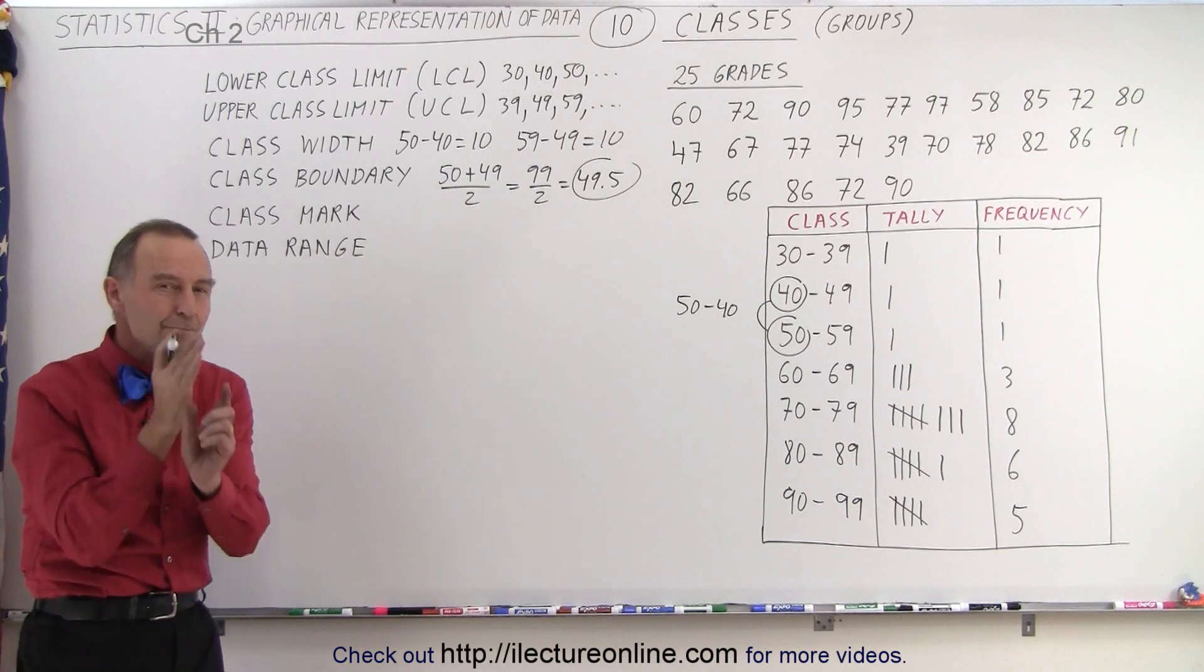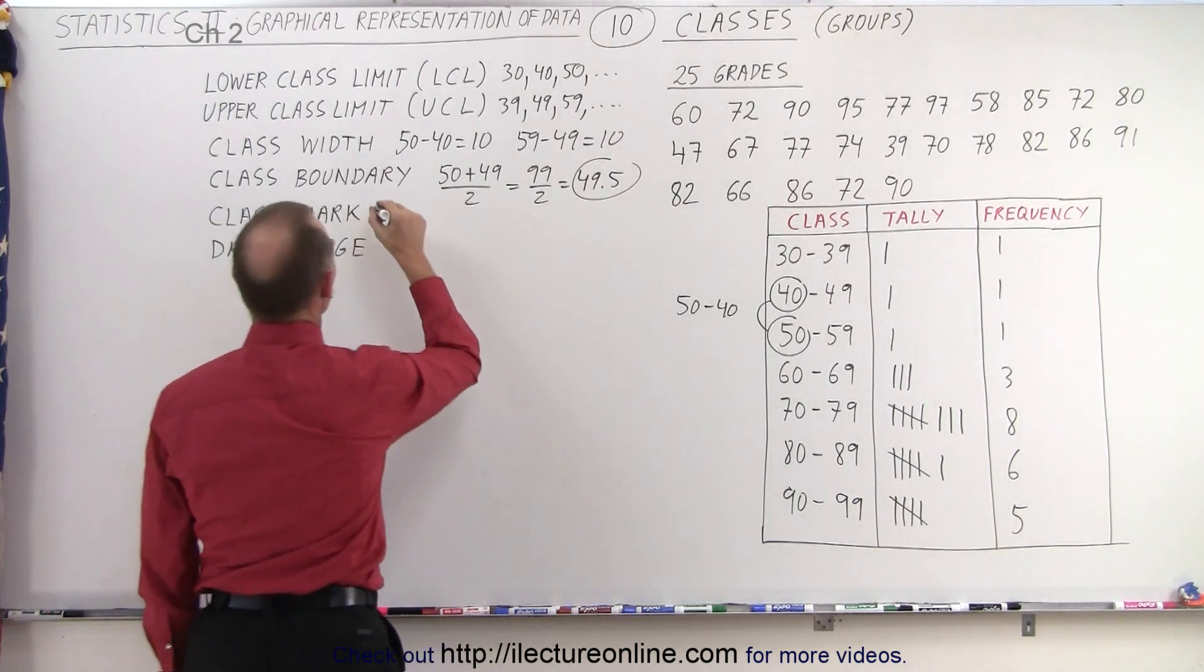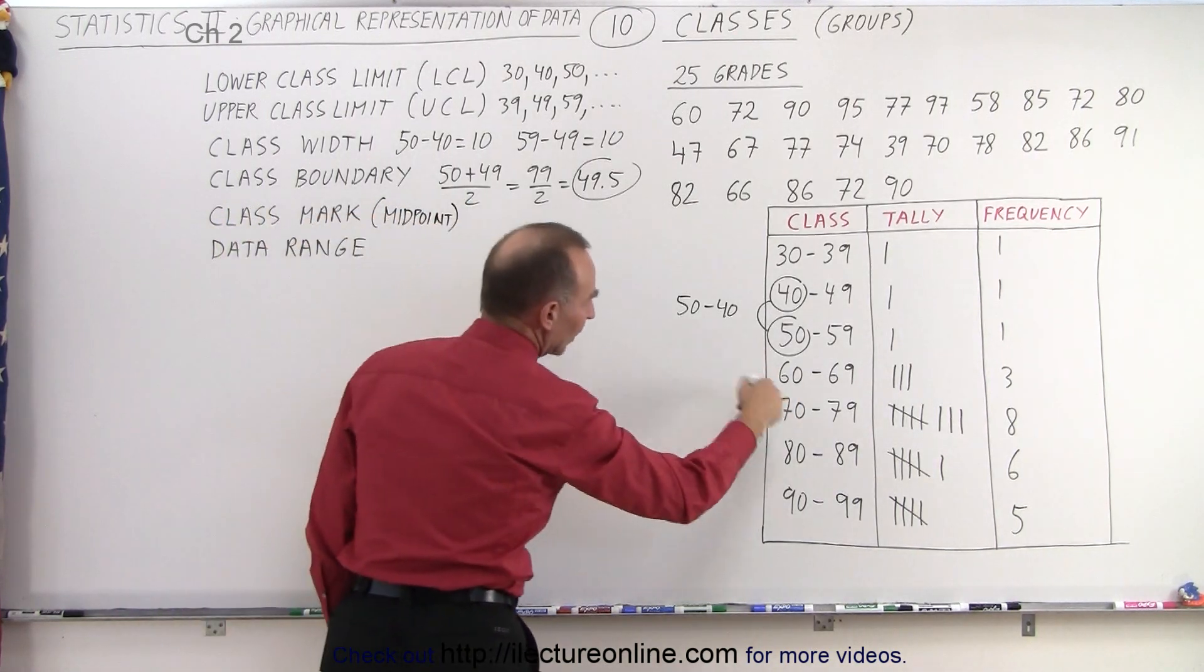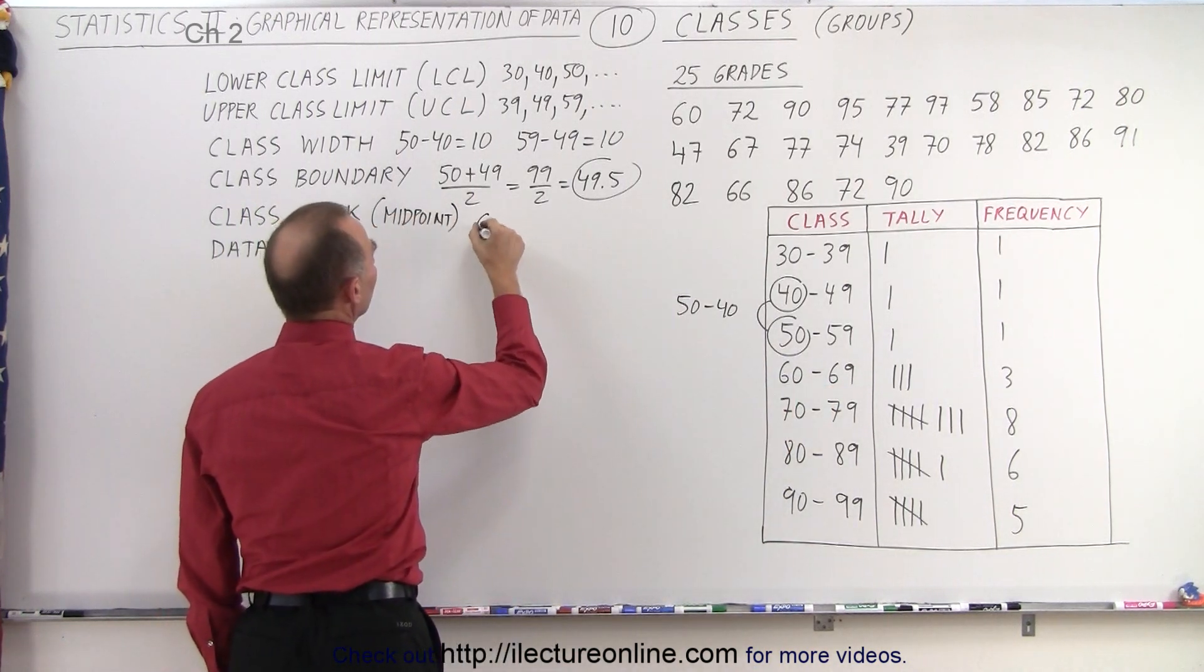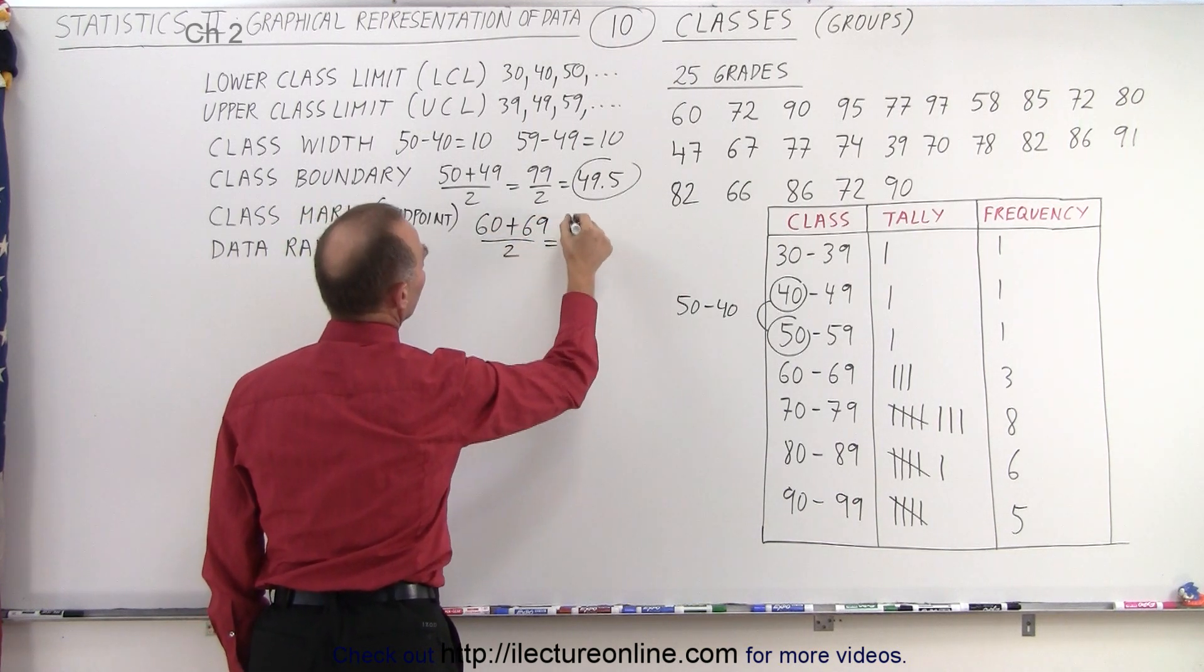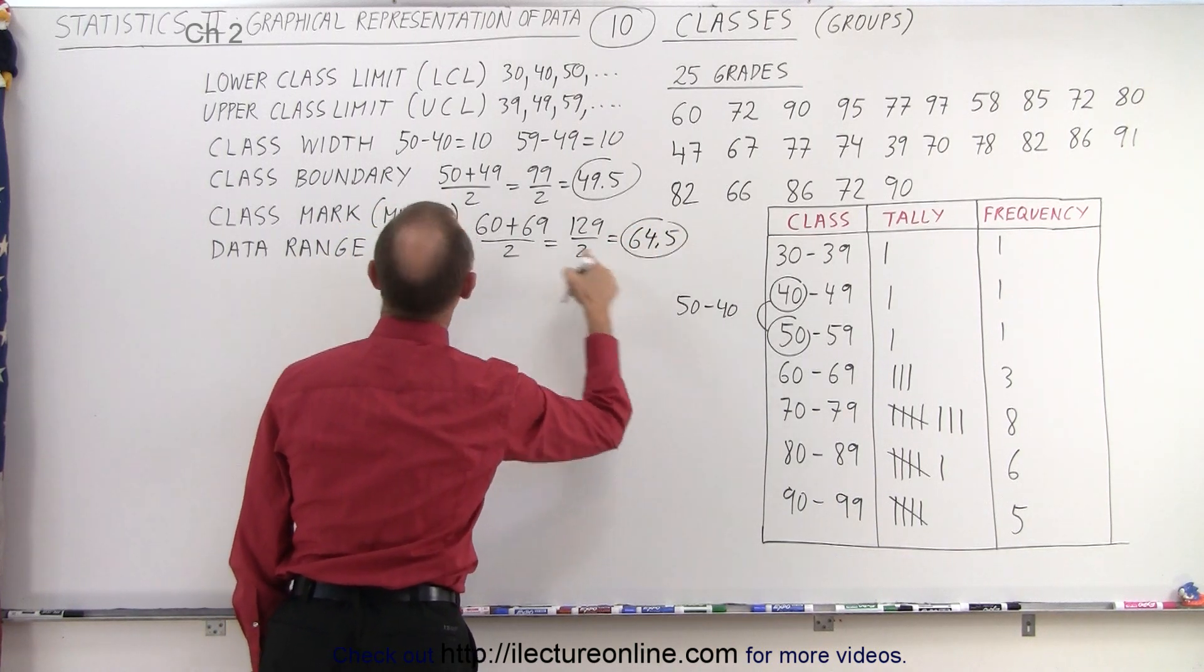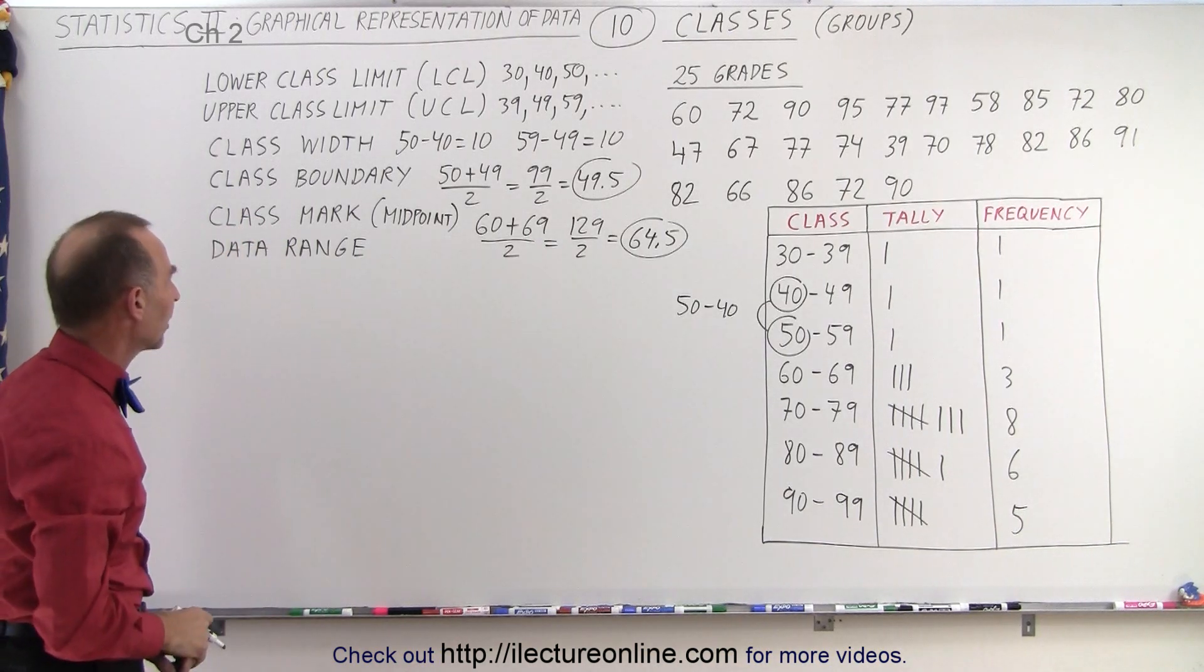The class mark is the midpoint of each class. To find the midpoint, the way to calculate that is to take one class, for example let's take this class right here. You add the lower limit plus the upper limit together and you divide by 2. So in this case that would be 129 divided by 2 which equals 64.5. So that would be the middle point or the class mark of that particular class.